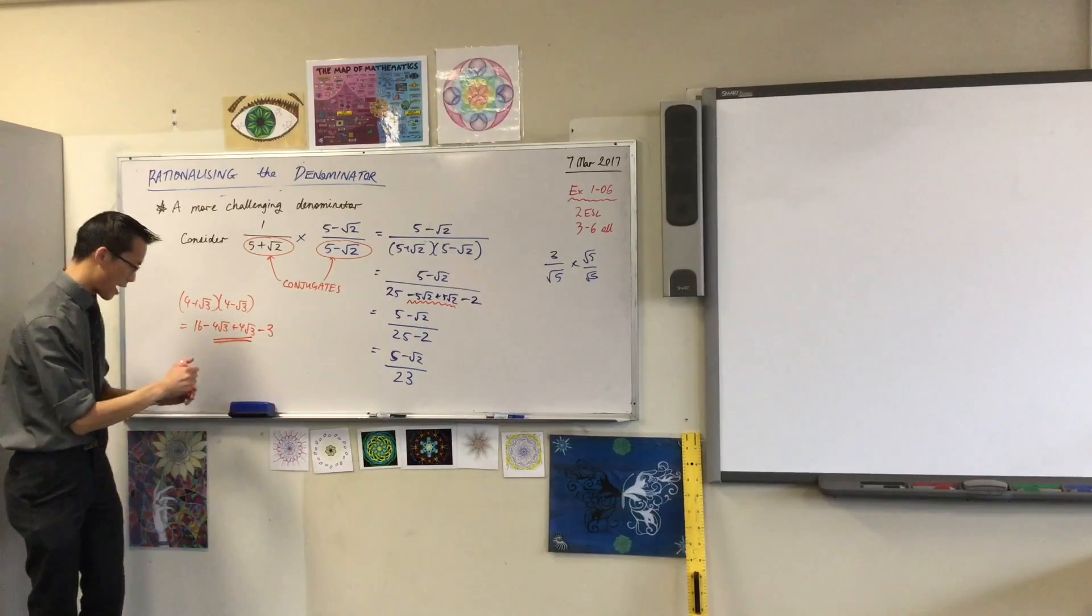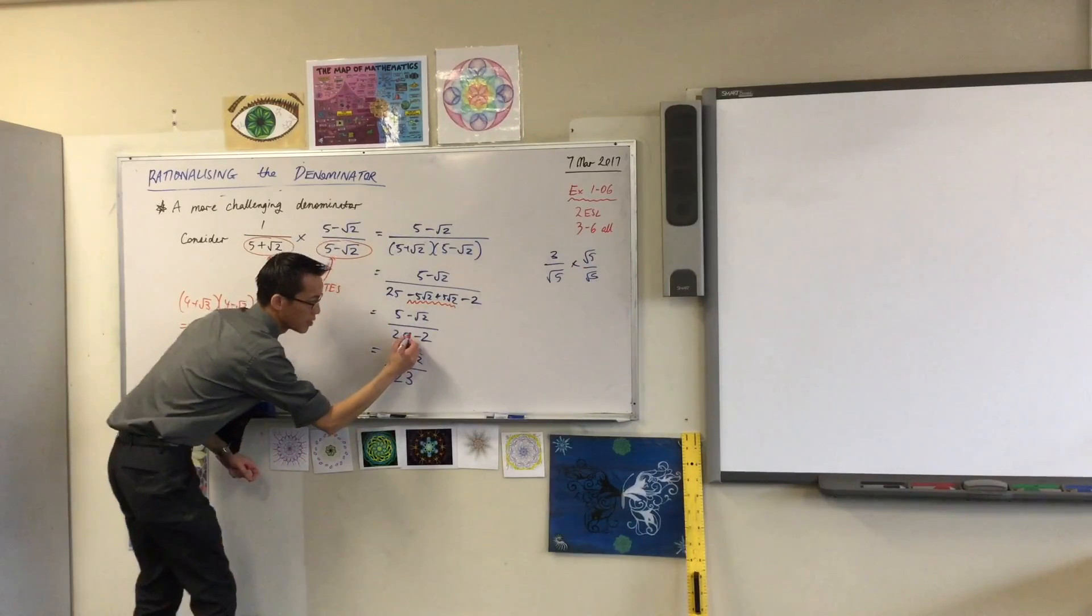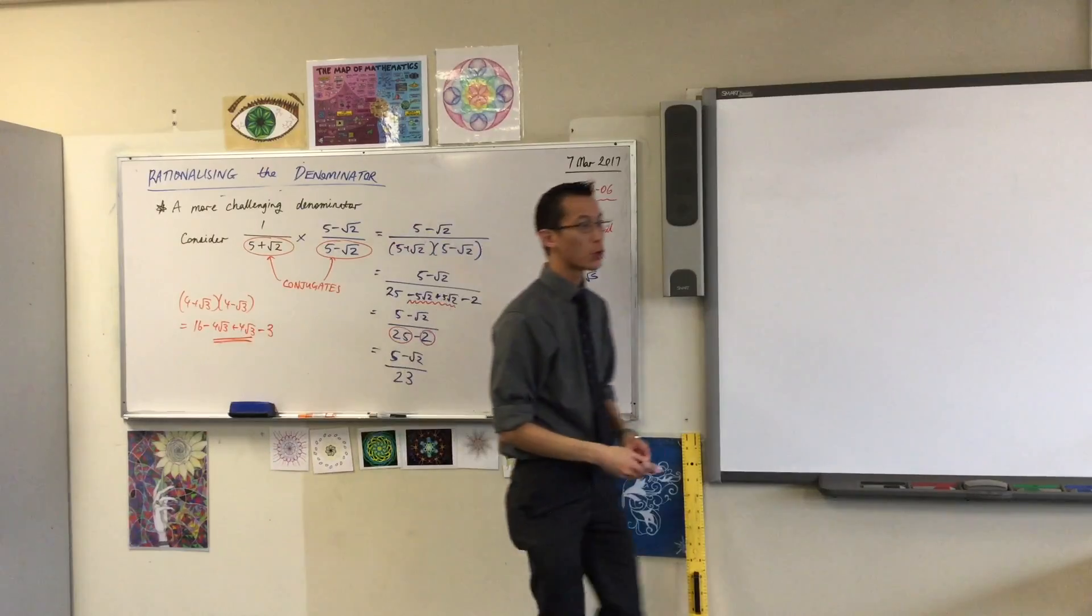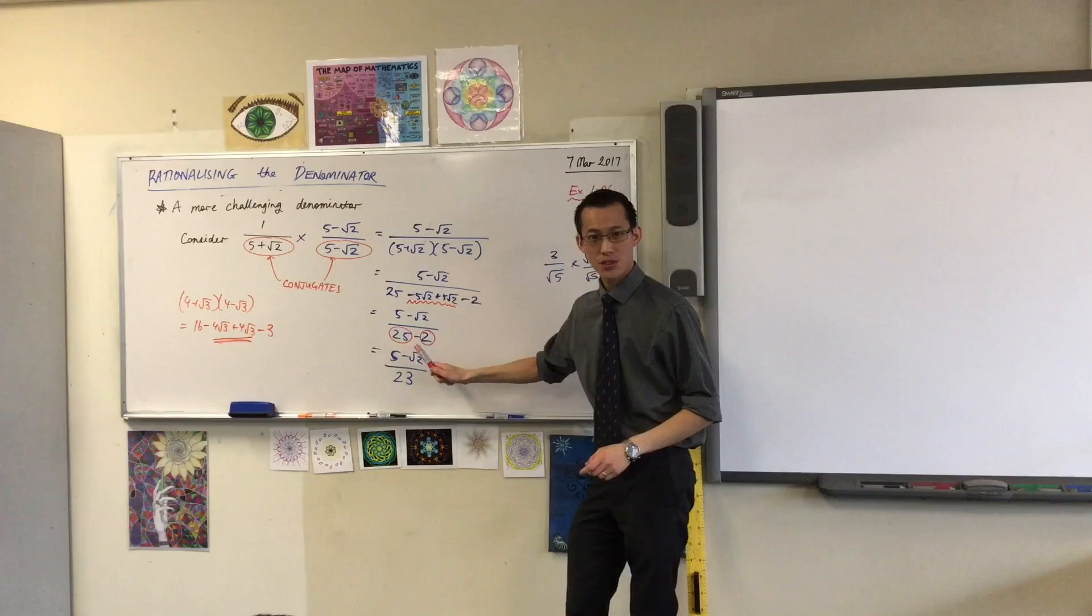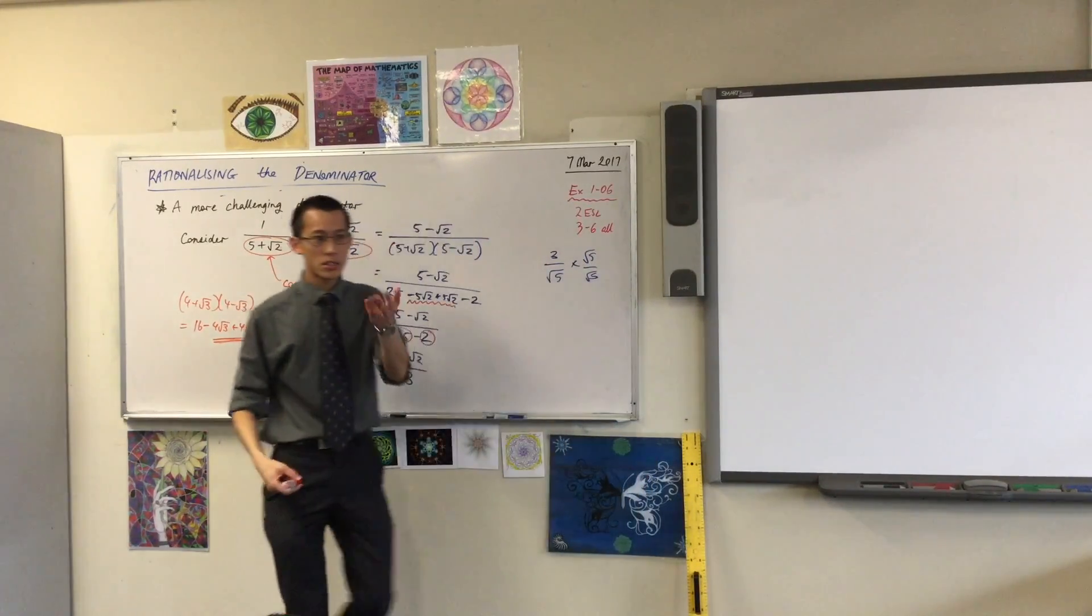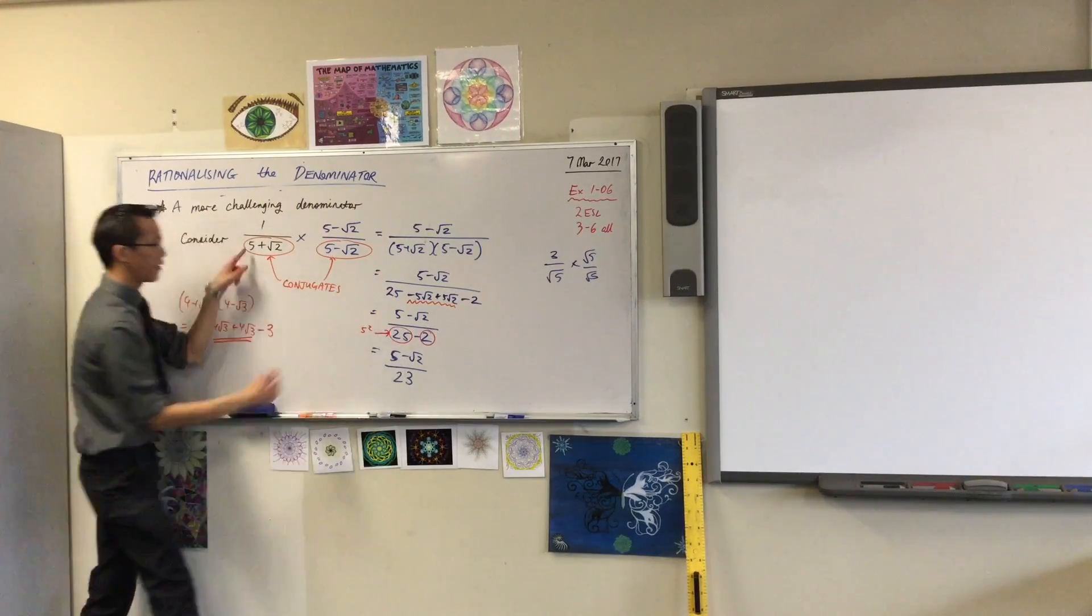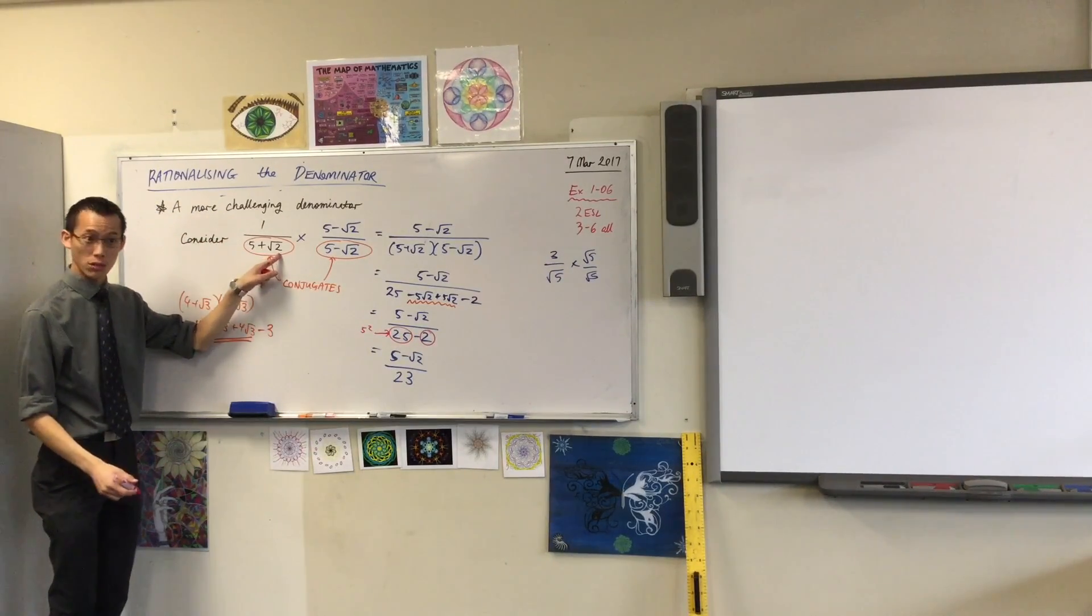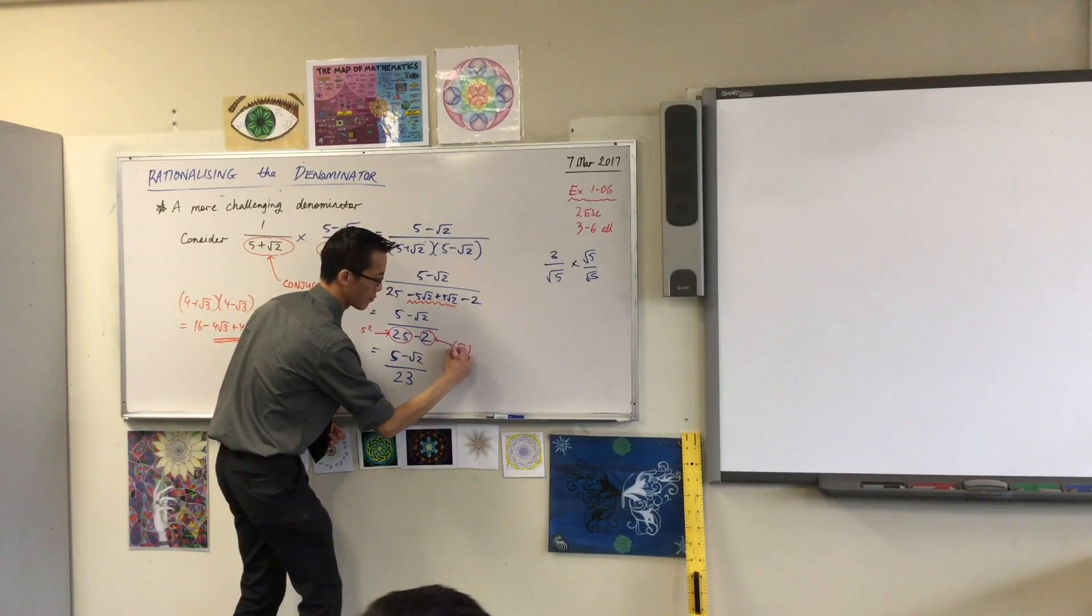And by the way, just have a look at this denominator over here. 25 and 2. Look back at the original fraction. The very first one I wrote on the board. 25 and 2. What's their connection to these two numbers? It's just the squares, right? You see, that is really 5 squared from here. And this is root 2 squared. Does that make sense?